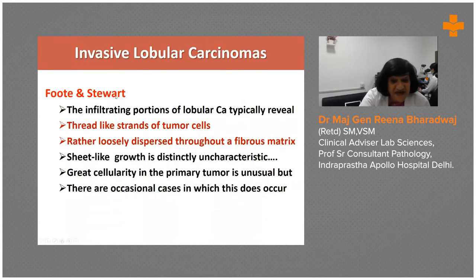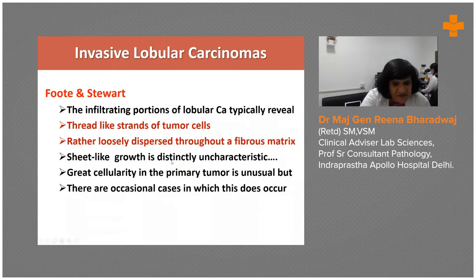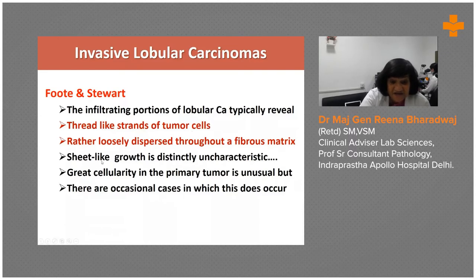Foote and Stewart's exact definition of infiltrating lobular carcinoma was thread-like strands of tumor cells — what we today recognize as Indian file — loosely dispersed throughout a fibrous stroma. A sheet-like growth is distinctly uncharacteristic; please note this. They go more in cords. Greater cellularity in the primary tumor is unusual, very different from ductal carcinoma. These rules of thin strands without a sheet-like arrangement can be broken at times.